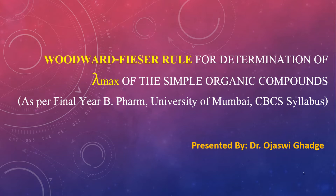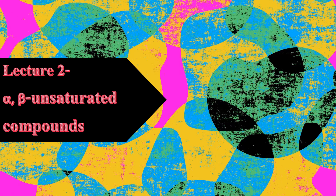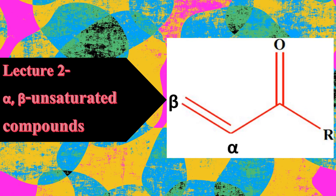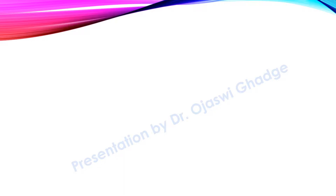Welcome everyone to our next session for understanding the Woodward-Fisher rule for determination of lambda max. In this second session, we will be understanding the Woodward-Fisher rule for determination of lambda max for alpha-beta unsaturated compounds. We have already understood some basic terms of the Woodward-Fisher rule for calculating lambda max for the 1,3-butadiene system in our earlier session.